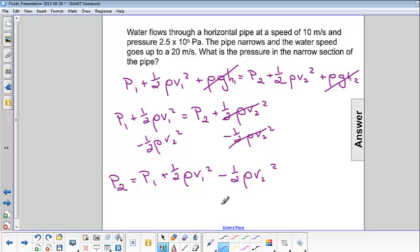Now what we can do is we can factor out the 1 half and the rho. And then what we're left with is v1 squared minus v2 squared.